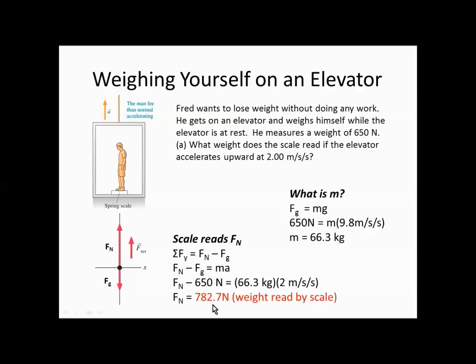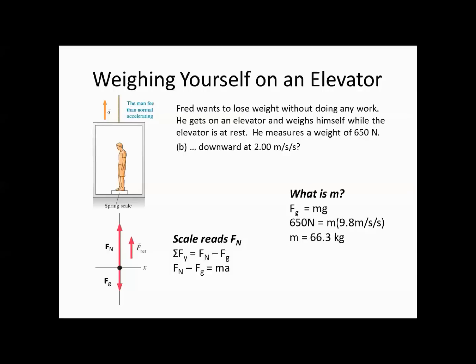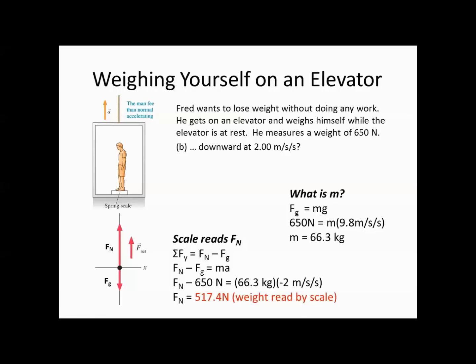What about if he's going downward? We solve the problem the same way, but the acceleration is now negative — going down at negative 2 meters per second squared. That gives us a normal force of 517.4 newtons. So his weight read by the scale will be less than his weight at rest if he's accelerating downward.